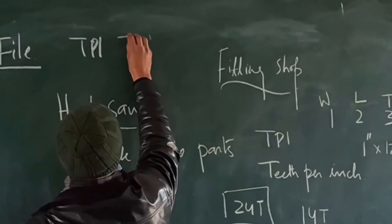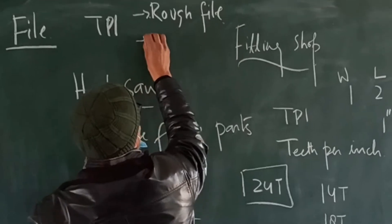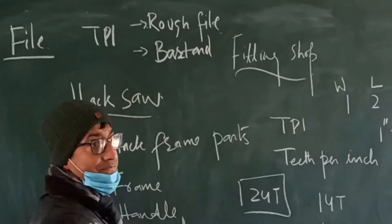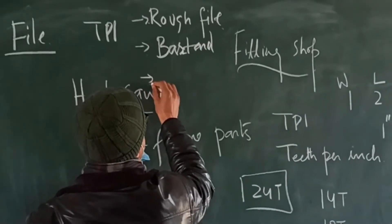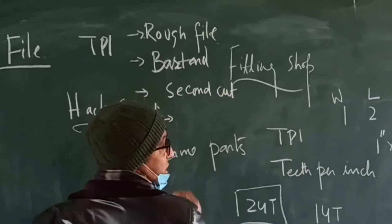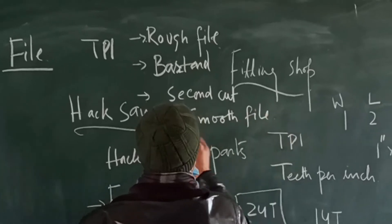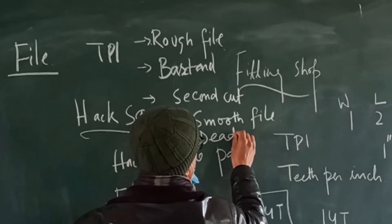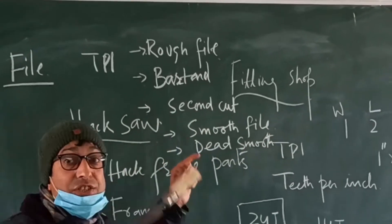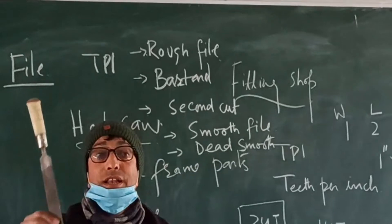The file classifications are: number one is rough file, number two is bastard, number three is second cut, number four is smooth file, and the last one is dead smooth file. These are the five classifications of the hand file, which is used to file your object.